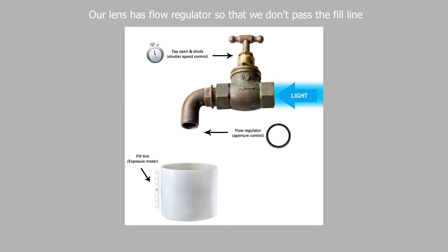Our lens has a flow regulator so that we don't pass the fill line. This is called the aperture. The aperture controls the rate of flow of light.